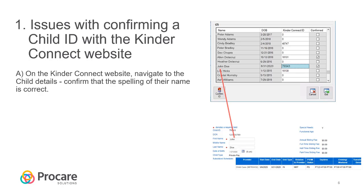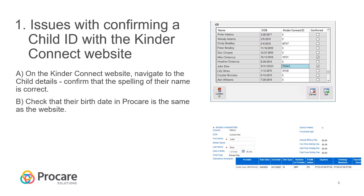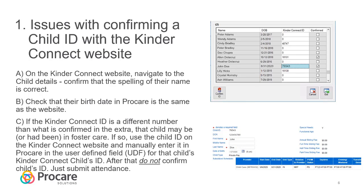After confirming the name matches, check for common spelling issues including middle initials, hyphenated names, and suffixes like Junior. Also check that the date of birth matches exactly as shown on the website. If the KinderConnect ID differs from the number confirmed on the website, that may indicate the child is or has been in foster care. In that case, use the child ID from the KinderConnect website and manually enter it under the user-defined fields for that child in ProCare.